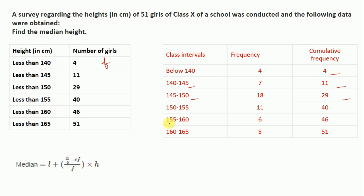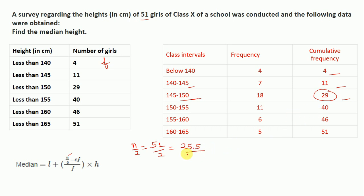Don't worry, we will discuss all these terms. First we find N/2. N is the total number of girls, which is 51, so N/2 equals 51 divided by 2, which gives 25.5. So N/2 is equal to 25.5. Now in which class interval does 25.5 lie? It will lie in 145 to 150, because in the cumulative frequency it is less than 29 and greater than 11, so it lies in this interval.